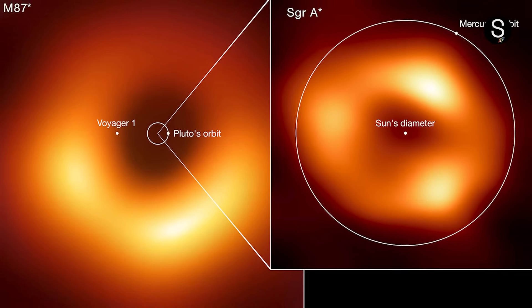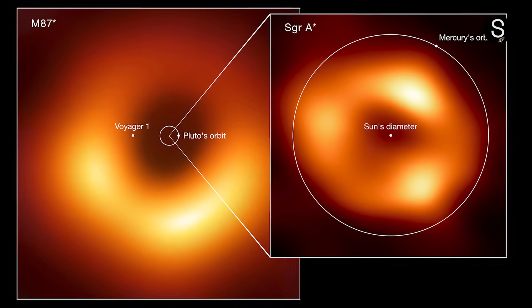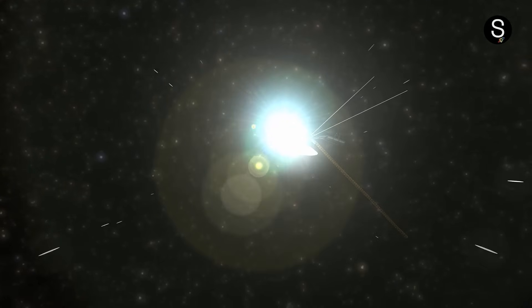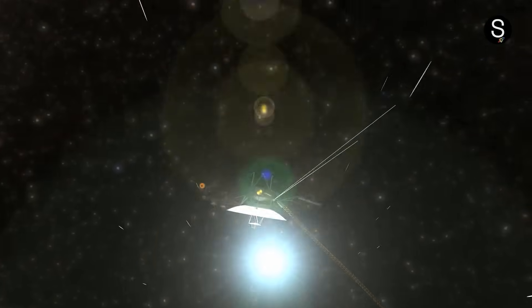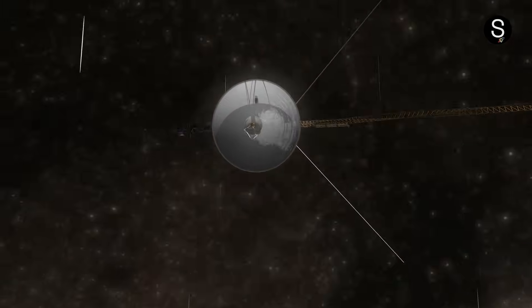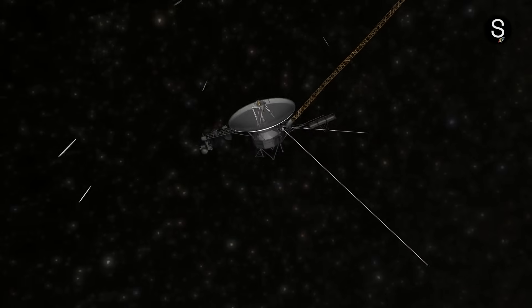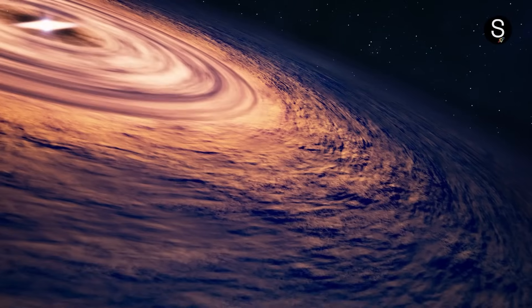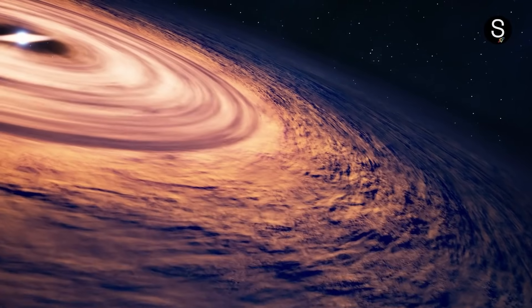Even more amazing, Voyager 1 discovered evidence of a black hole. It identified a particle beam moving at nearly the speed of light. A shockwave formed this particle stream as Voyager 1 left our solar system and entered interstellar space. The presence of a black hole was revealed by this shockwave.